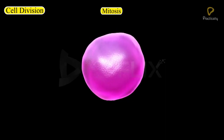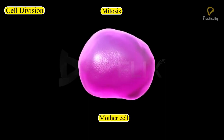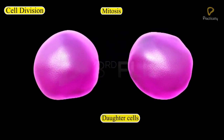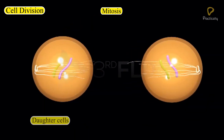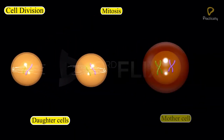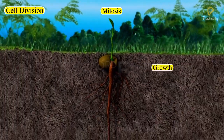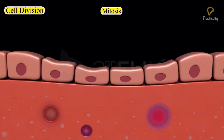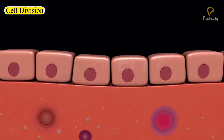In this process, each cell is called a mother cell, which divides to form two identical daughter cells. The daughter cells have the same number of chromosomes as the mother cell. It helps in growth and repair of tissues or regeneration of injured parts in organisms.